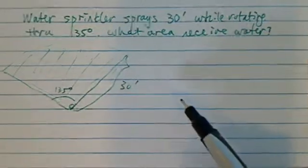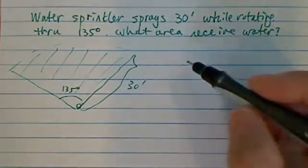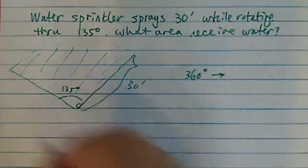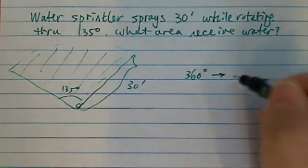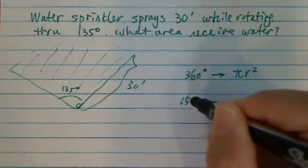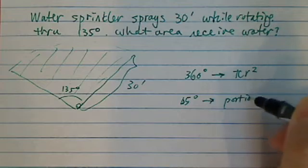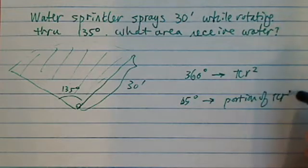There's an easier way to solve this in that you recognize if it's 360 degrees, the sprinkler can spray all around. Then we have a pi r squared. Since we have only 135 degrees, we only have a portion of it. Portion of pi r squared.